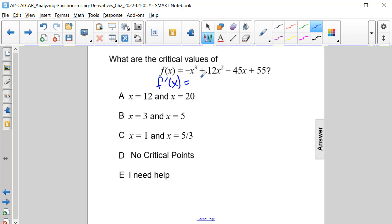We're going to use the power rule in order to do that. So we will get negative 3x squared plus 24x minus 45.